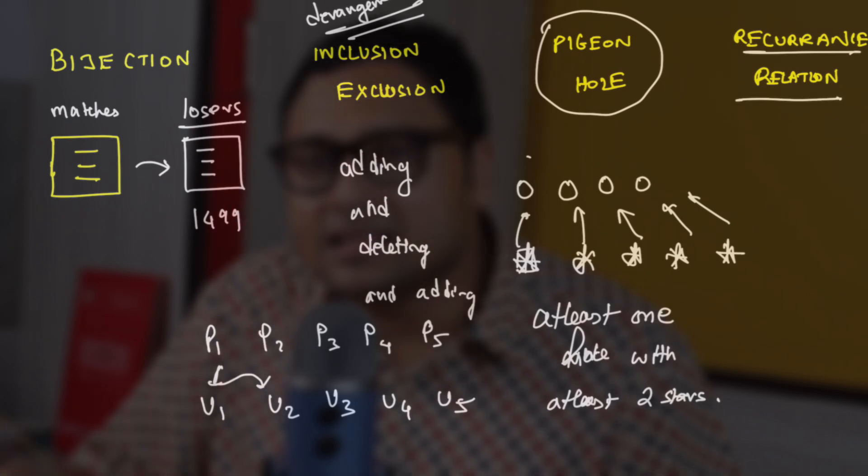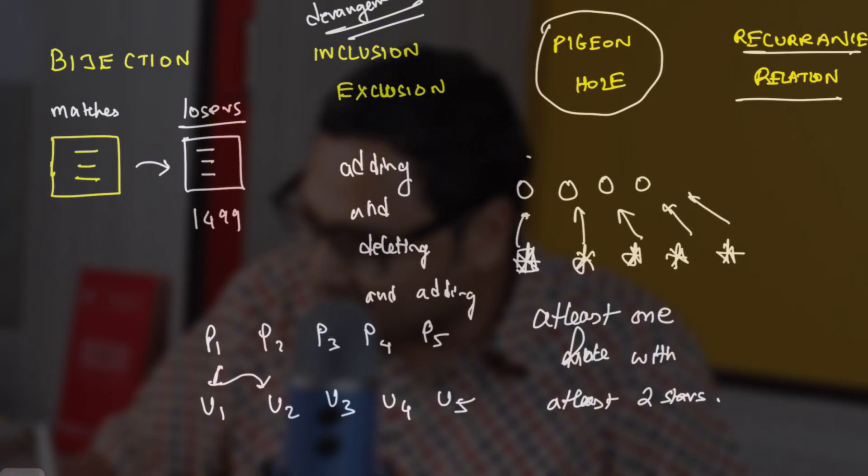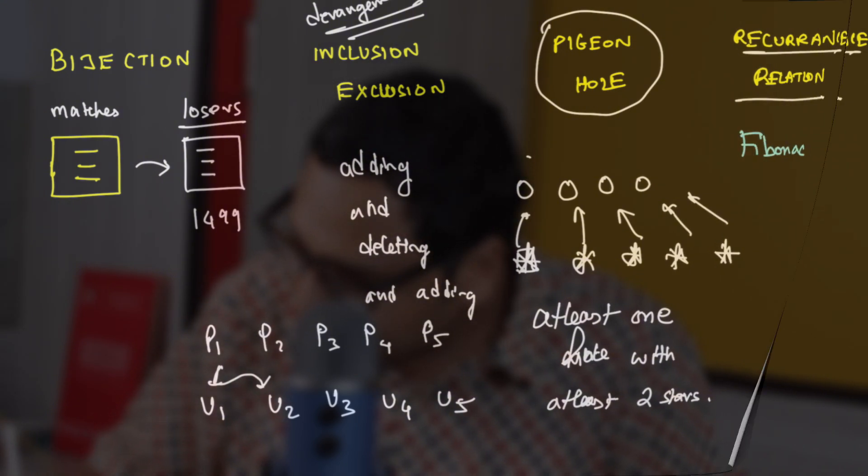The fourth strategy is recurrence relations. It's a little bit twisted: the main collection you are trying to count is recursively built. You count the cases of ones and twos, then add them up to find the case of three, and so on. One good example — not really a combinatorics problem — is the Fibonacci series, which is a recursively defined sequence of numbers. Recurrence relations are very powerful.